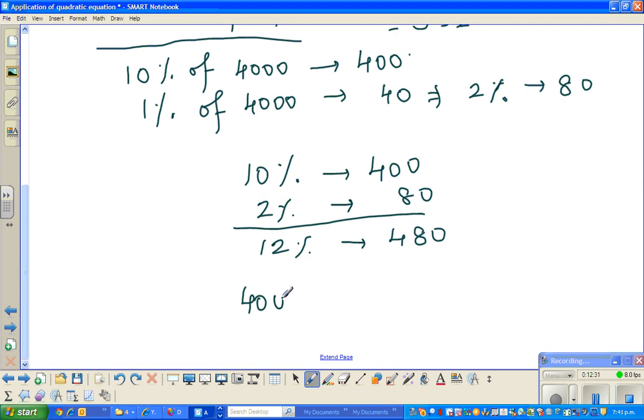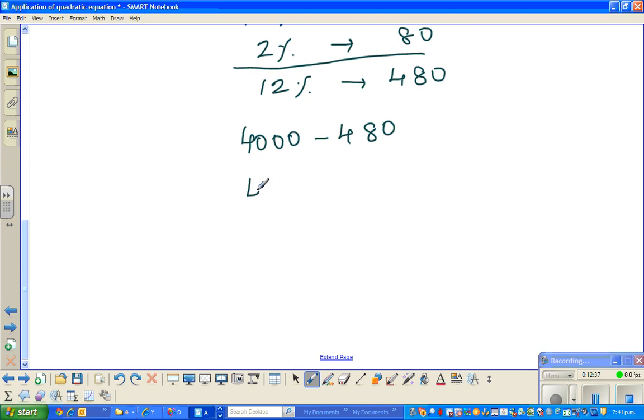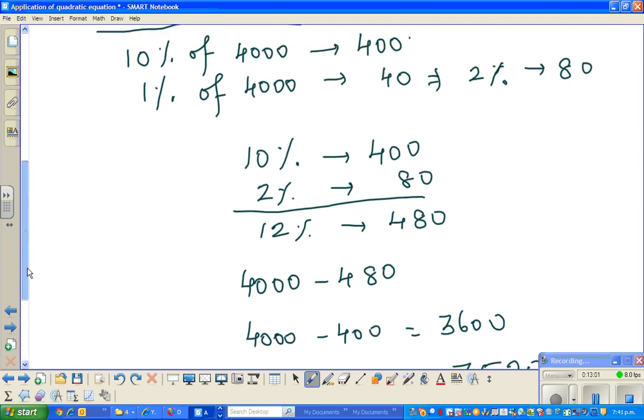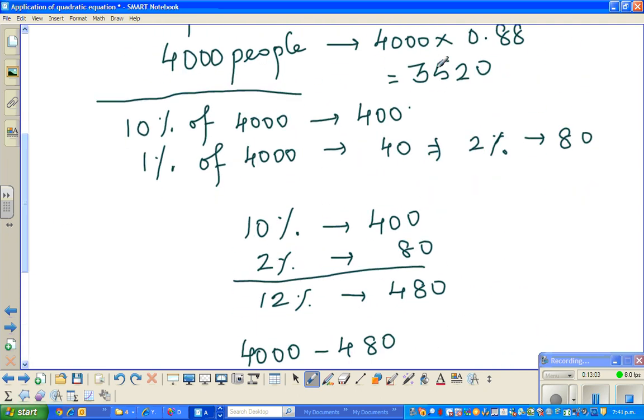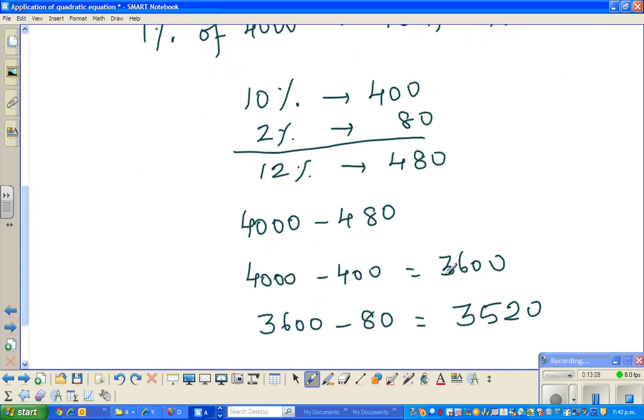It is 4,000 take away 480. I will not use a calculator here. So it's 4,000 take away 400, which is 3,600. Then 3,600 minus 80, that is 3,520. You can check that on a calculator. And what was our answer? Here is the answer in one step: 3,520. And here is the answer in two steps, which is the same. See you in the next video. Thank you.